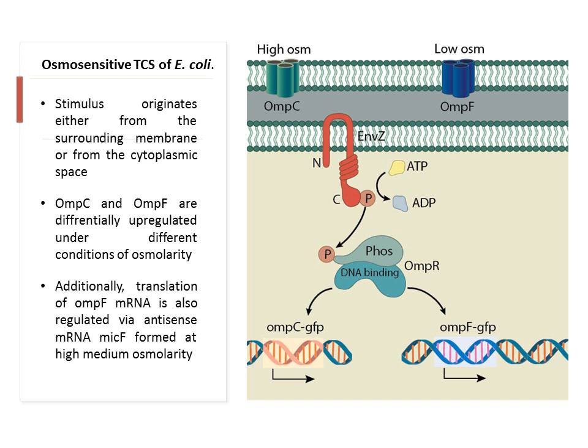Another osmosensitive two-component system of E. coli is the EnvZ/OmpR system. OmpR are outer membrane proteins constitutively expressed at lower concentrations in bacterial cells. When there is high osmolarity, OmpC is formed more; when there is low osmolarity, OmpF is formed more. In either case, EnvZ is the histidine kinase on the membrane that senses the signal and undergoes autophosphorylation in response.